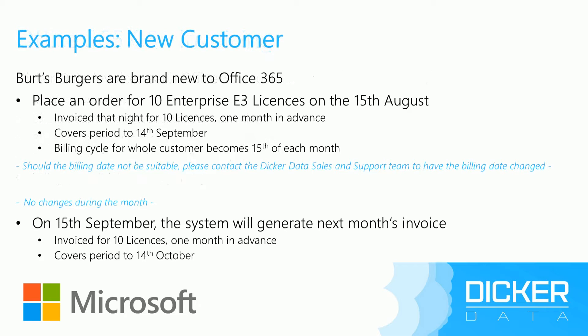Now we'll start to look at some examples. On the 15th of August, Vertsburgers add a brand new CSP subscription for 10 Enterprise E3 licenses — it's their first ever CSP subscription. That night, the tool generates an invoice for 10 licenses for one month in advance, covering the period through to the 14th of September. The billing cycle is then set at the 15th of the month for that customer for all of their subscriptions.